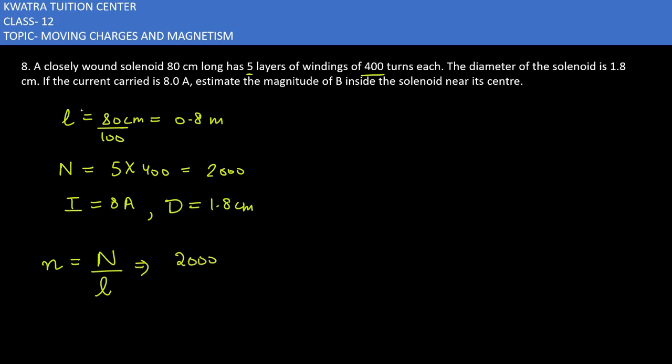2,000 divided by 0.8. So this is 20,000 over 8. We will write it directly: 20,000 over 8.